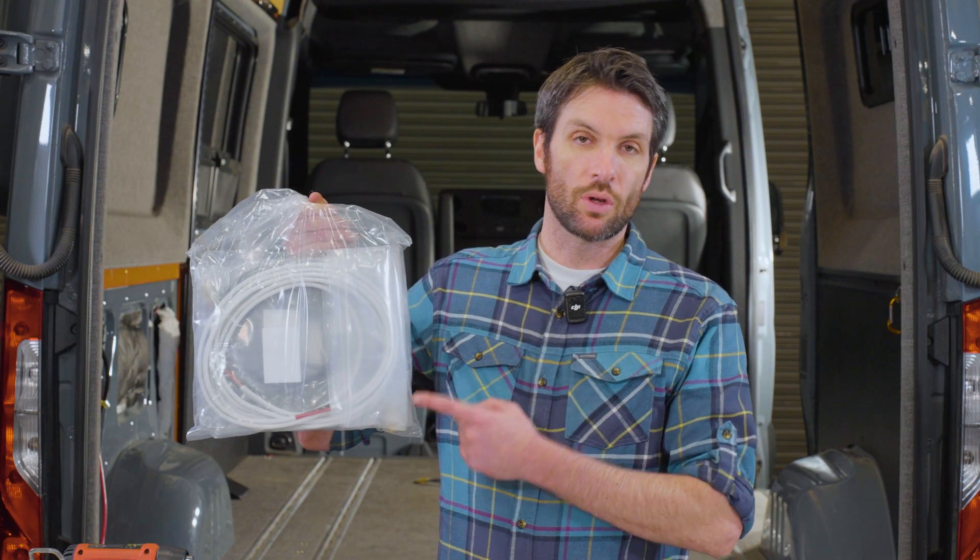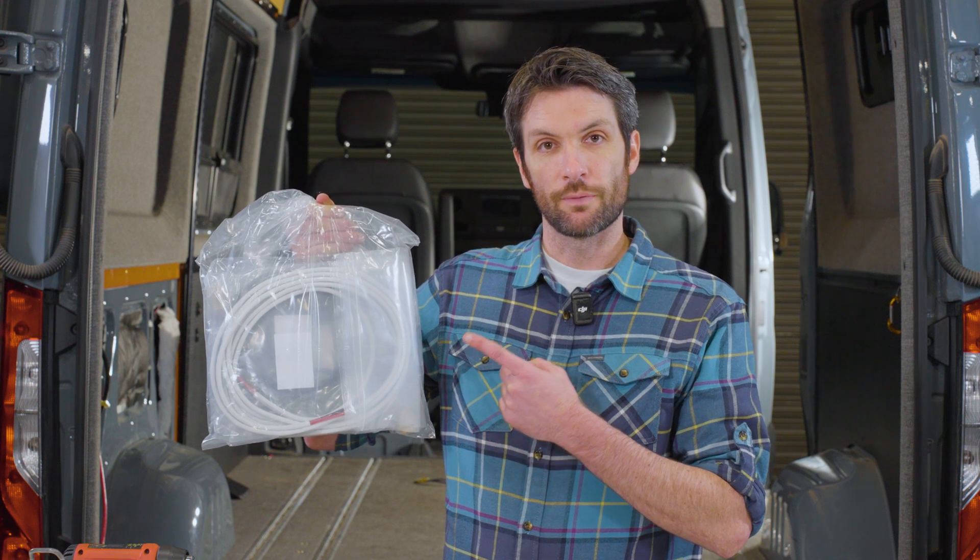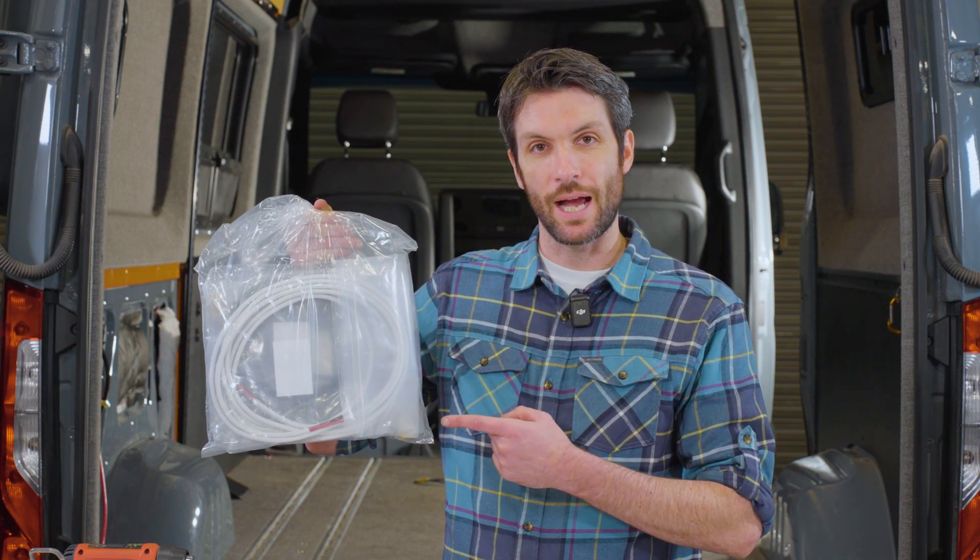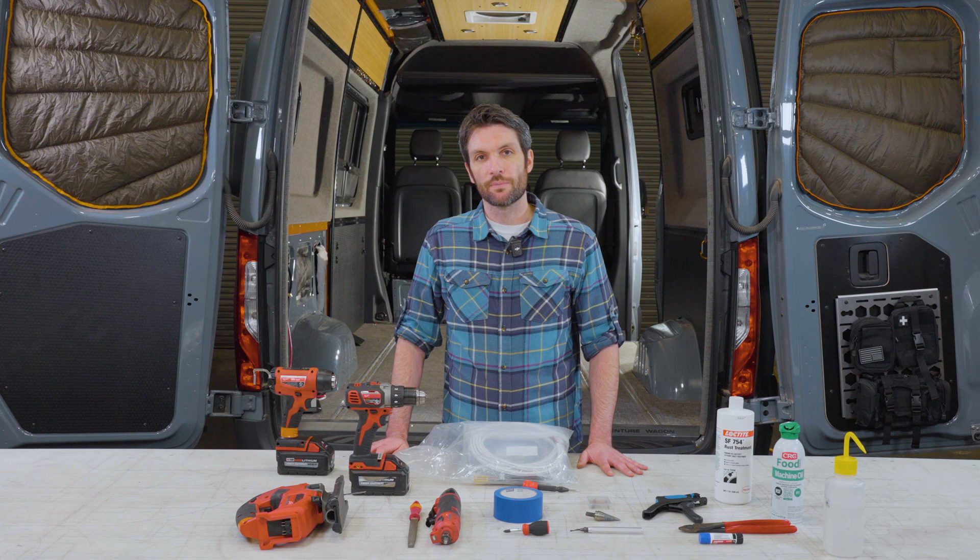And of course you're going to need your solar wiring package which includes your rooftop wiring gland, your photovoltaic cables, your duplex wire to run inside the van, 40 amp breaker, and all of your butt connectors and everything else needed for this installation. Doug is going to be in the video taking the installation from here, so let's get started.